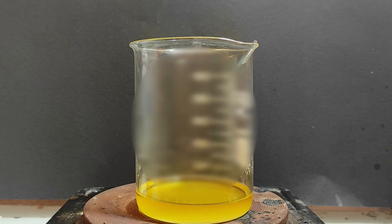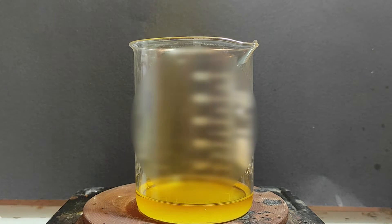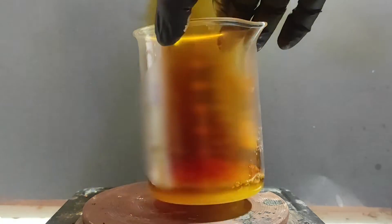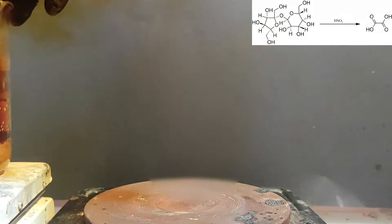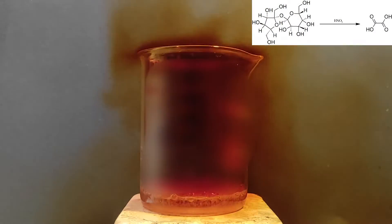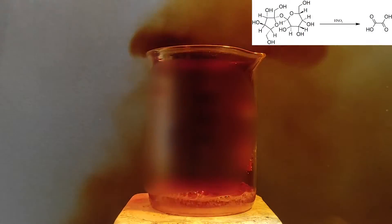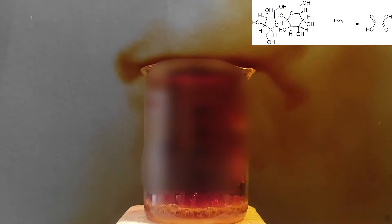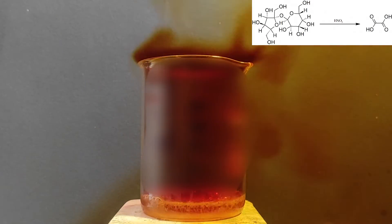Once it passed a certain temperature the sucrose in the table sugar was broken down by the acid and then the resulting glucose and fructose are broken down further into oxalic acid. This oxalic acid is quite impure but it doesn't matter because oxalic acid can be impure and the reaction will work anyway.